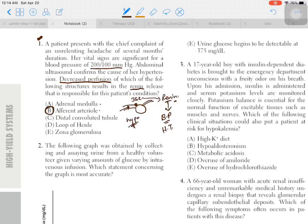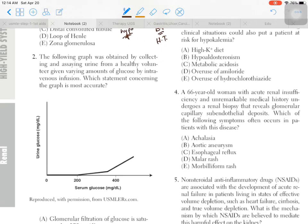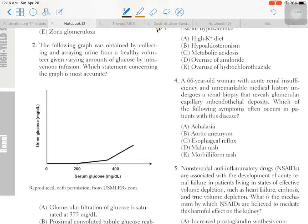The second question: The following graph was obtained by collecting and assaying urine from a healthy volunteer given varying amounts of glucose by intravenous infusion. Which statement concerning the graph is most accurate? They give us two readings: urine glucose level and serum glucose level. If we increase serum glucose up to 200, there will be no glucose in urine.